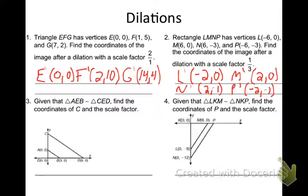What about number 3 here? It says, given that triangle AEB is similar to triangle CED, find the coordinates of C and the scale factor. Well, I'm going from B to D here. How do you go from B to D? Multiply by 3. So to go from A to C, what do I need to do? Multiply by 3. And what's C's new coordinates going to be at? That is at (0, 6). Good work.